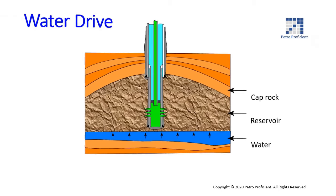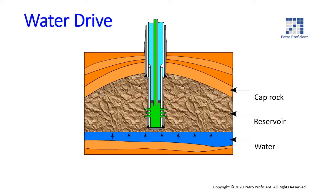Water drive. Water contained in surrounding formations expands slightly and gravitates toward low points in the reservoir to provide a sweeping force for production of hydrocarbons. Water drive is generally an efficient form of reservoir drive, allowing approximately 85 percent of recoverable oil to be produced. Water drive reservoirs are typically maintained with water injection.